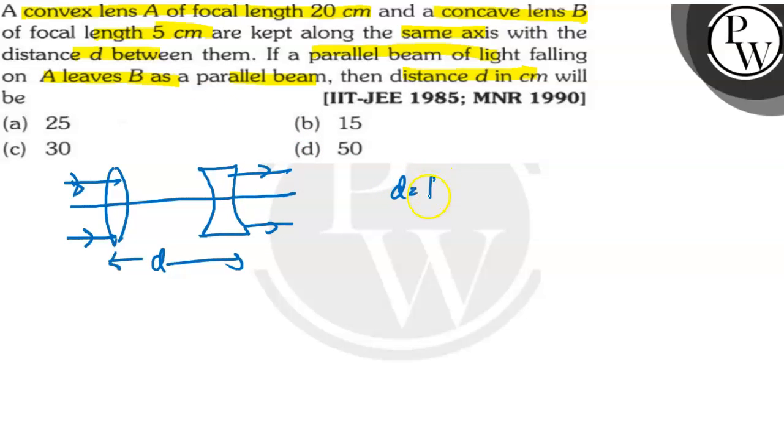Distance D will be equal to f1 minus f2. This focal length is f1, this is minus f2.